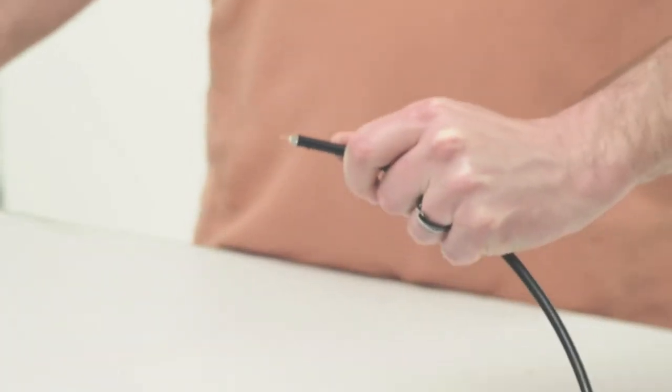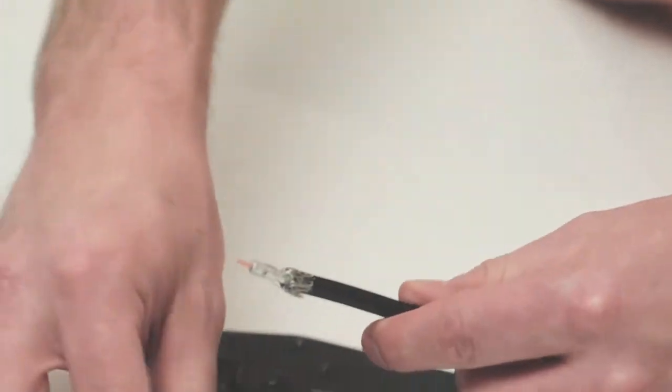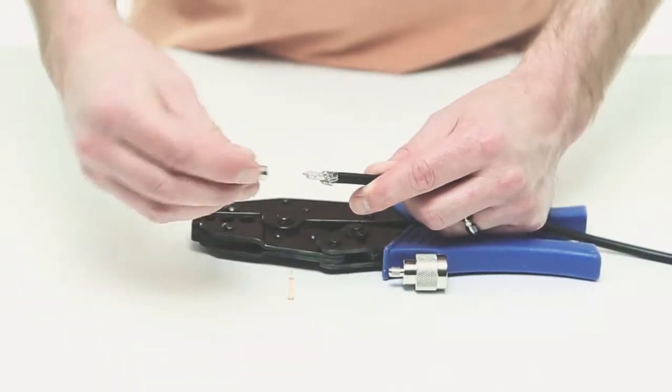Fold the braid over the jacket and slide on the ferrule.